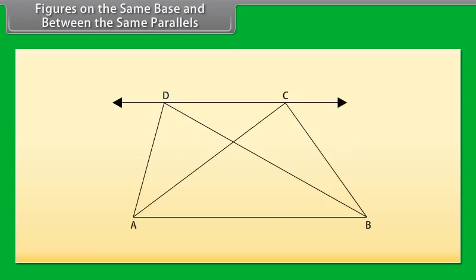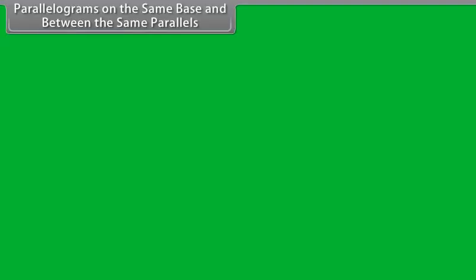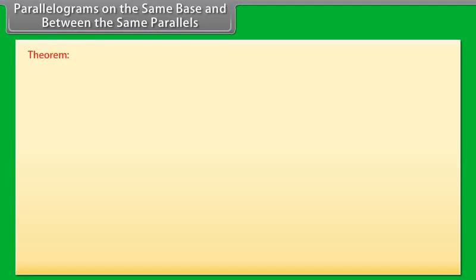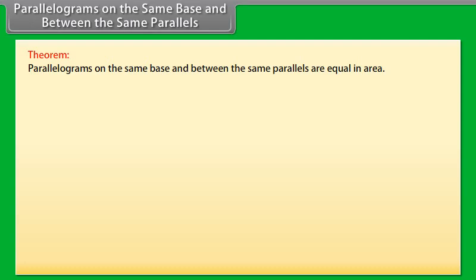Similarly, triangles ADB and ACB both lie on the same base AB and between the same parallels AB and DC. So we can say that two figures are said to be on the same base and between the same parallels if they have a common base side and the vertices or the vertex opposite to the common base of each figure lie on a line parallel to the base.